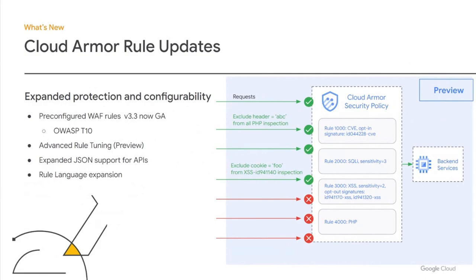In addition to Adaptive Protection Auto Deploy, we have introduced several expansions to our rules language and rules engine to help protect customers. We have just made generally available the 3.3 version of our pre-configured WAF rules corresponding to the most recent version of the industry standard set of rules to help mitigate the OWASP Top 10 web app vulnerability risks, as well as meet your security and compliance requirements. We have also made our WAF rules easier to deploy and maintain through the preview release of Advanced Rule Tuning, allowing customers to dial in the sensitivity or granular tuning preferences for their WAF rules. This includes the ability to exclude individual request elements like headers or cookies from inspection to reduce noise, as well as the ability to explicitly opt into desired sub-signatures of the rules. We have also expanded our API protection abilities through expanded support for JSON-formatted requests for any configurable content type, and continue to expand our custom rules language with more functions and transformations.